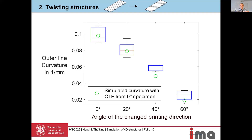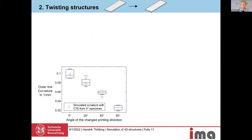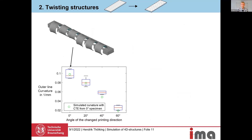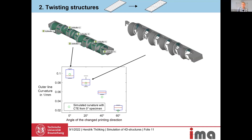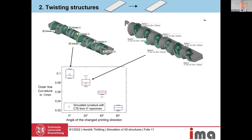We said we can accept the hypothesis for twisted structures, especially for smaller printing angles. Regarding data acquisition, we printed six validation specimens each and used a 4D 3D scanner, which delivered a point cloud. In the measurement software, we fit cylinders — or for twisted structures, circles — to the data, which delivered radii and curvatures for comparison.